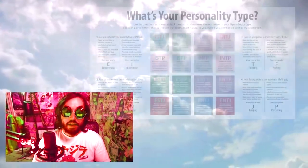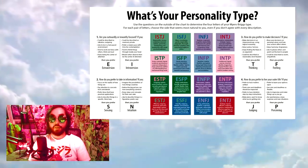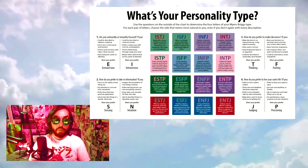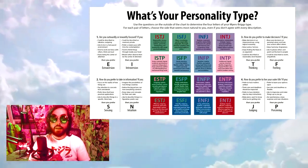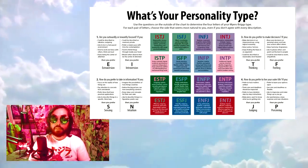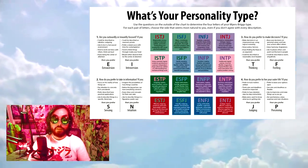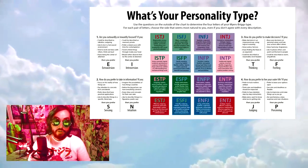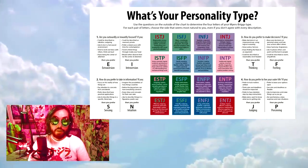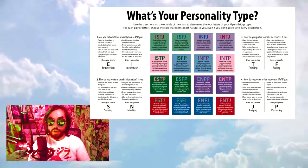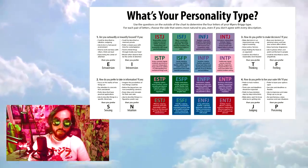I've got a bone to pick with the MBTI personality matrix. I think they were onto something with the 16 categories of people, but the way those people are characterized is completely backwards. Personality, after all, is extremely contextual and fluid. People act differently in response to different situations and different types of people.